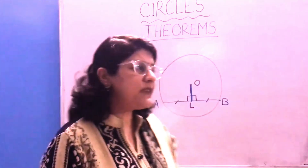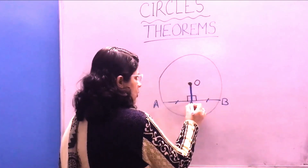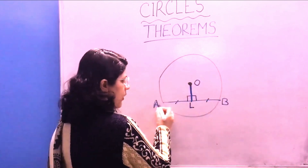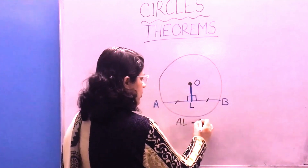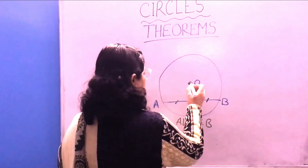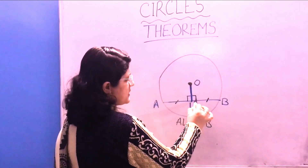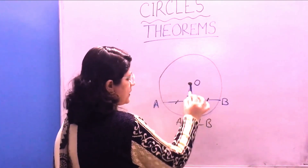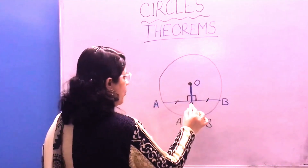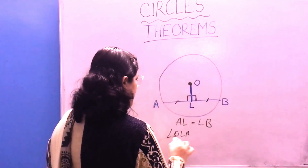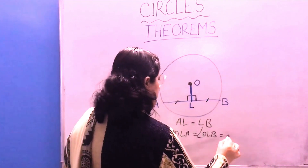The first theorem is: if a straight line is drawn from the center of a circle which bisects the chord AB — meaning AL is equal to LB — then this straight line makes an angle of 90 degrees with the chord. So angle OLA as well as angle OLB is equal to 90 degrees.